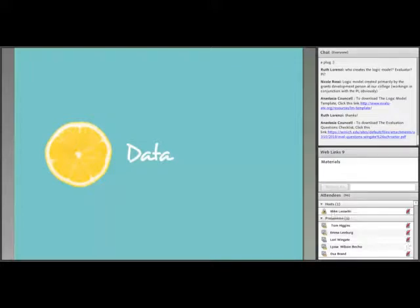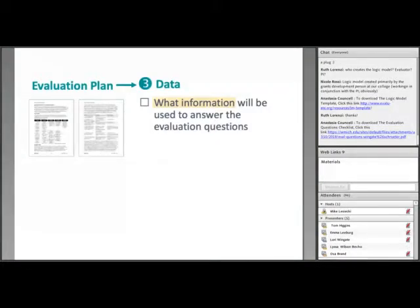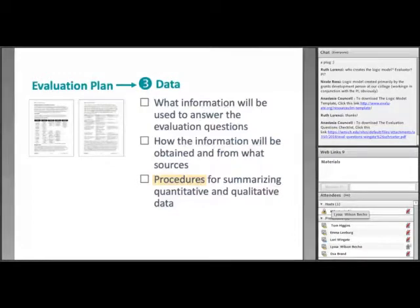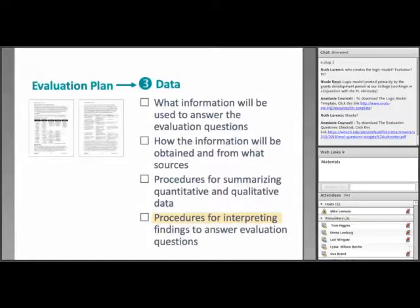The next element of an evaluation plan is about the data — what information will be used, how it will be collected, analyzed, and interpreted. In this section of your evaluation plan, describe what information will be used to answer the evaluation question — these are your indicators. Describe how the information will be obtained and from what sources — these are the data collection methods. Describe how quantitative and qualitative data will be summarized — that's the analysis. And describe how findings will be used to answer the evaluation question — that's the interpretation.